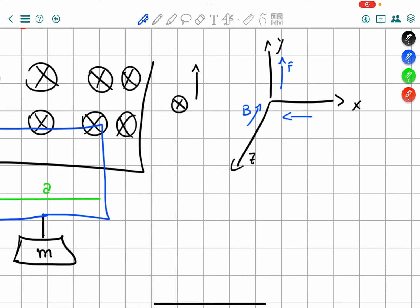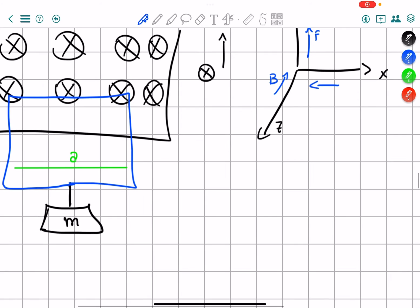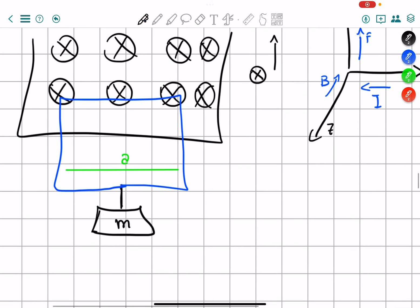We want the force up, so the thumb going along the force, so pointing up, the magnetic field or index going inside the page, and our current is going to be our middle finger. And of course this is the current. So therefore the current that counts is, well, this part right here, but it's not inside the magnetic field so it doesn't count, and this one right here.